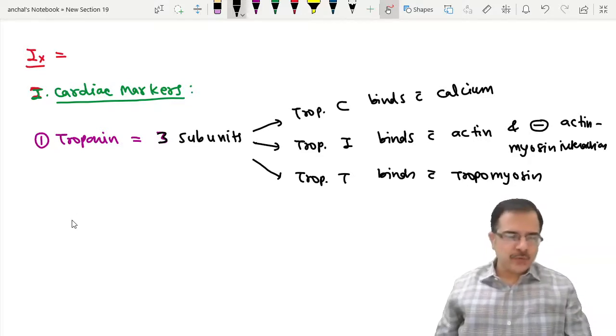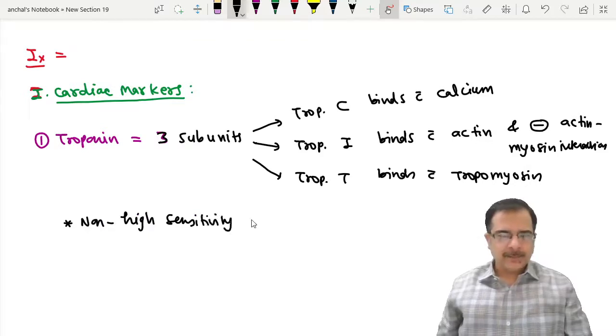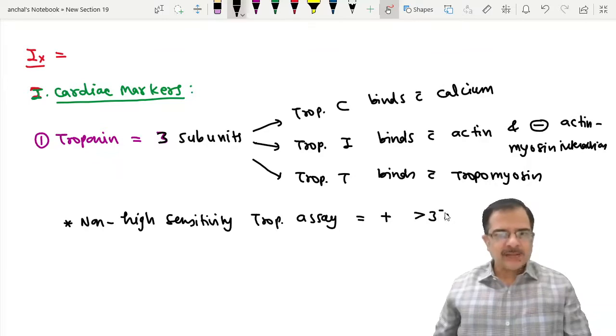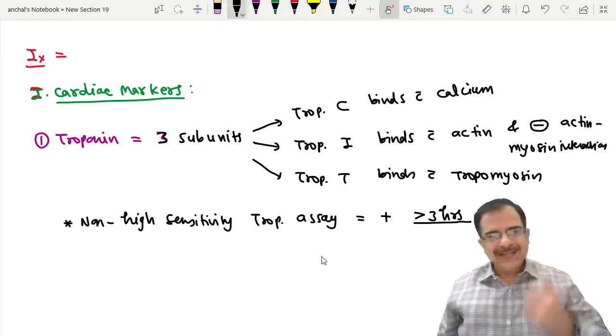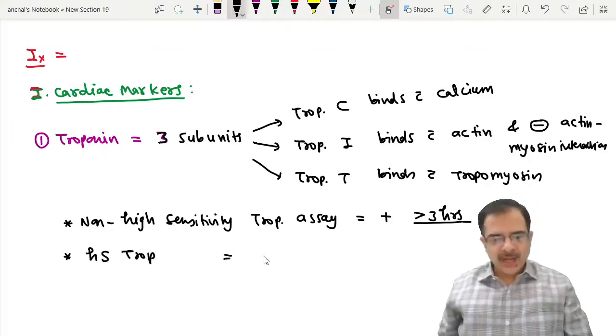There are two types of assays for troponin. One is non-high sensitivity troponin assay, and it is positive after three hours. We have HS, highly sensitive troponin test, and they are positive in one to three hours.